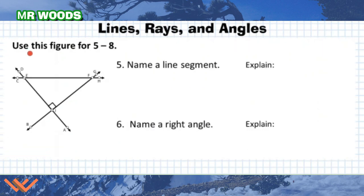As you can see here, it reads use this figure for five through eight. That's telling me this figure is going to be for questions five through eight, and we have five and six here. It says name a line segment. There's so many segments I can choose from. I'm just going to say EF. EF is a line segment. It has ending points. We can see that right here. There's E and F, and it's continuous. There's no breaks in between it. It is a line segment.